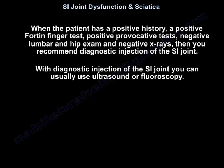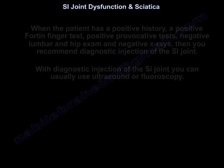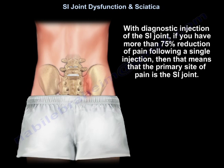When the patient has a positive history, a positive Fortin finger test, positive provocative tests, negative lumbar and hip exam, and negative X-rays, then you recommend a diagnostic injection of the SI joint. Diagnostic injection of the SI joint can be performed using ultrasound or fluoroscopy. If there is more than 75% reduction of pain following a single injection, that means the primary site of pain is the sacroiliac joint.